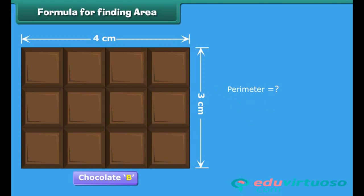What would be the perimeter of chocolate B? Let us find out. The perimeter will be equal to twice the sum of the squares along its length and width. Thus, perimeter of chocolate is equal to 14 cm. Alternatively, perimeter equals twice the sum of length and width.